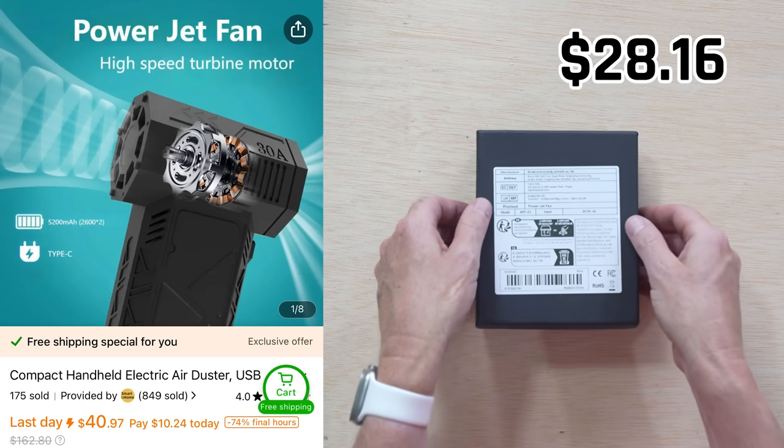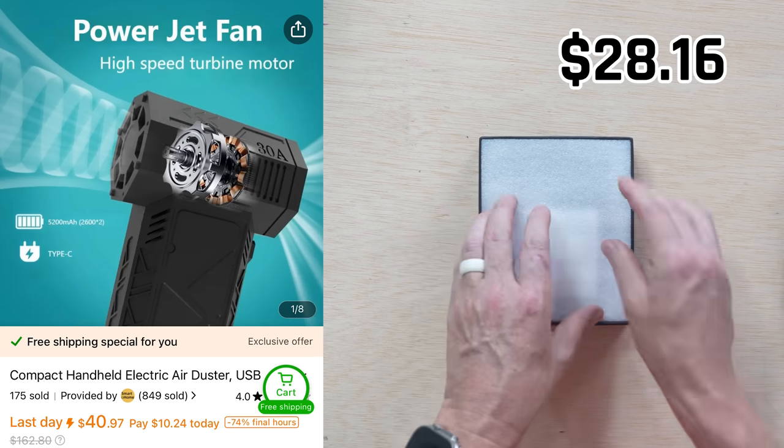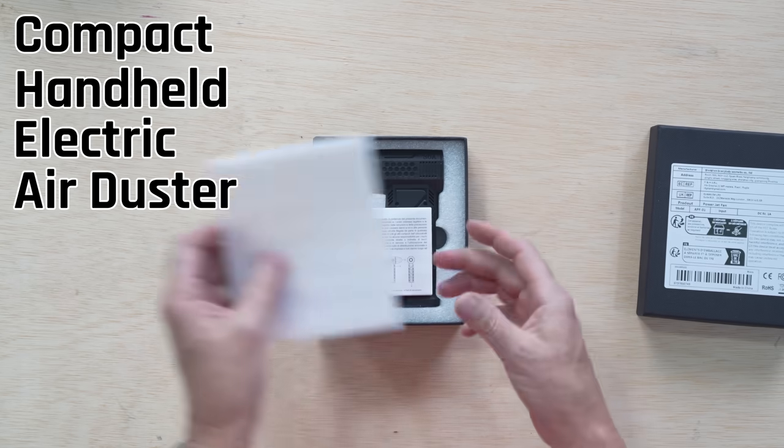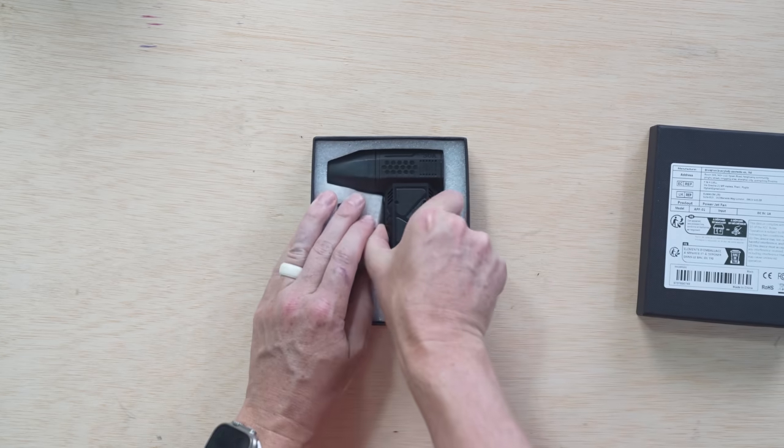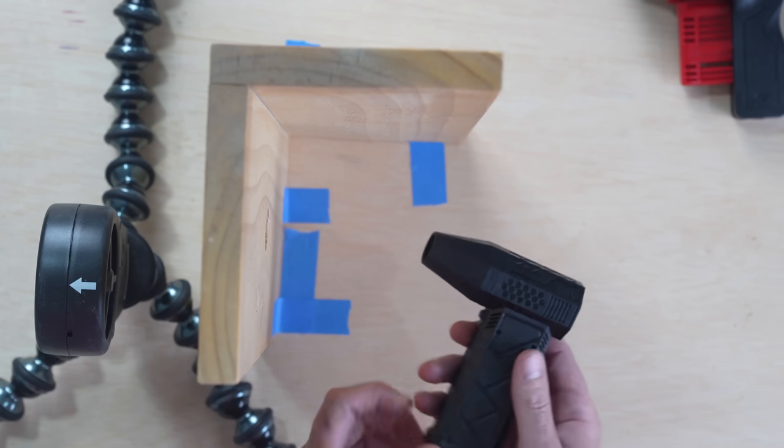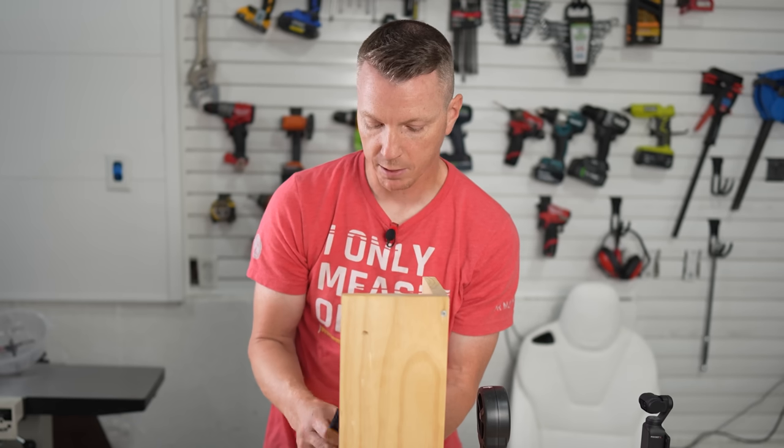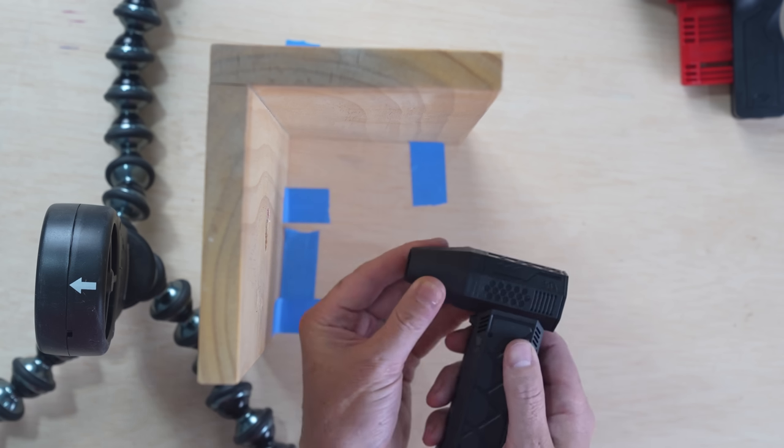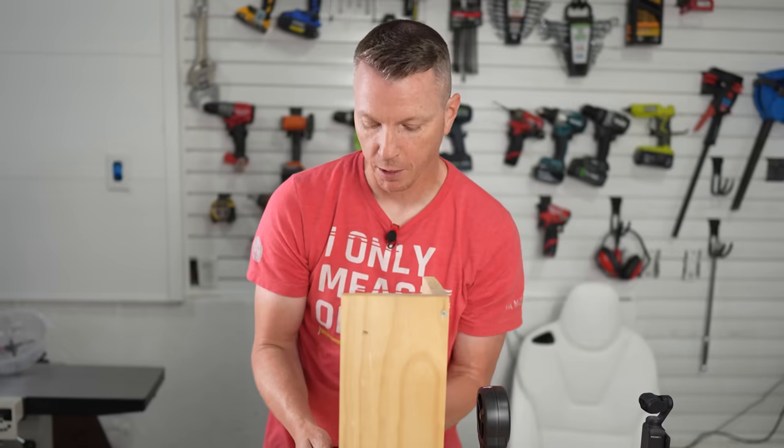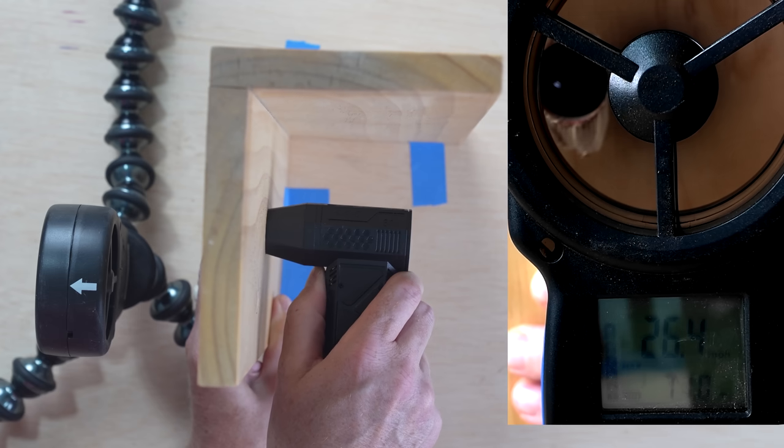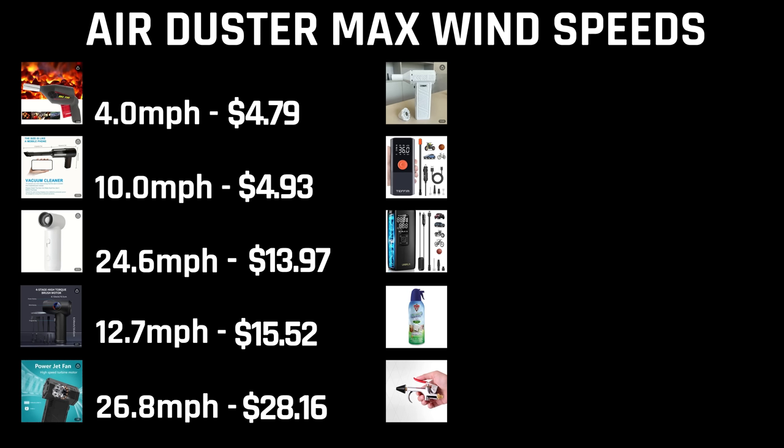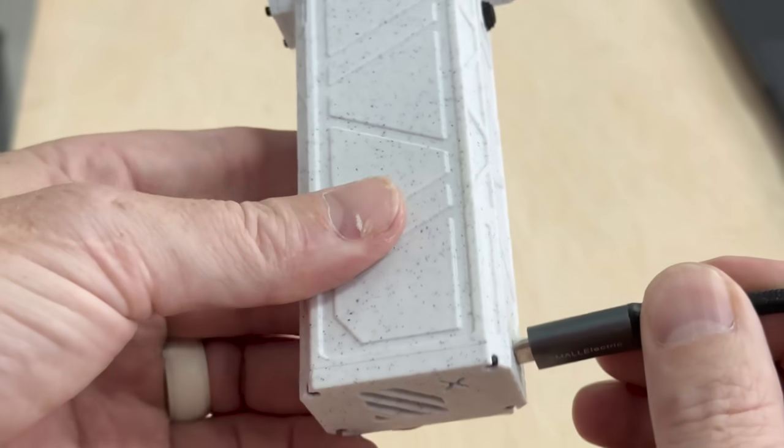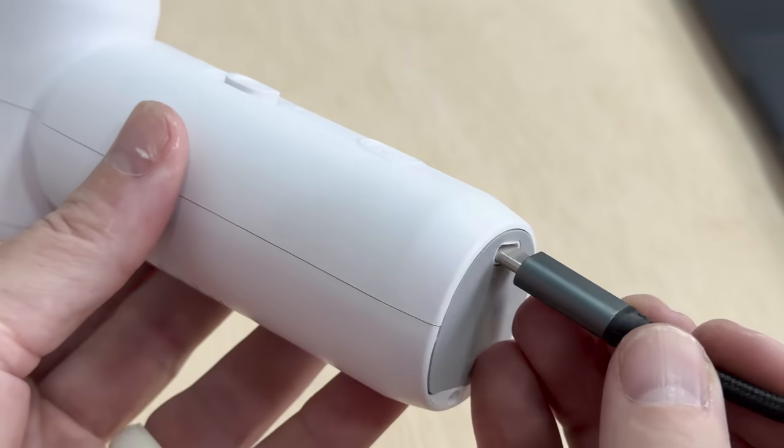Jumping up to twenty eight dollars and sixteen cents we have the compact handheld electric air duster slash power jet fan. Now this thing actually is really powerful. One thing I like about this one is that the nozzle on this has little magnets embedded in it right around and they just pop on there like that which is pretty convenient. Twenty six point eight. Pretty good twenty six point eight miles per hour on that one. All of these by the way use a USB-C cable to recharge them.